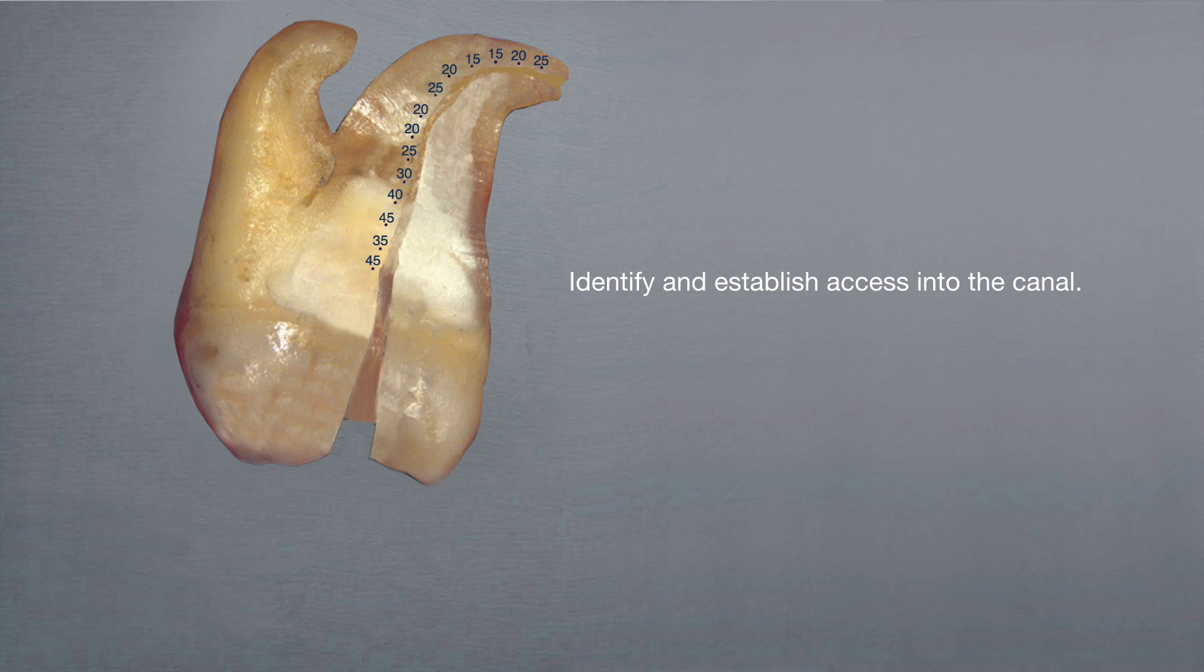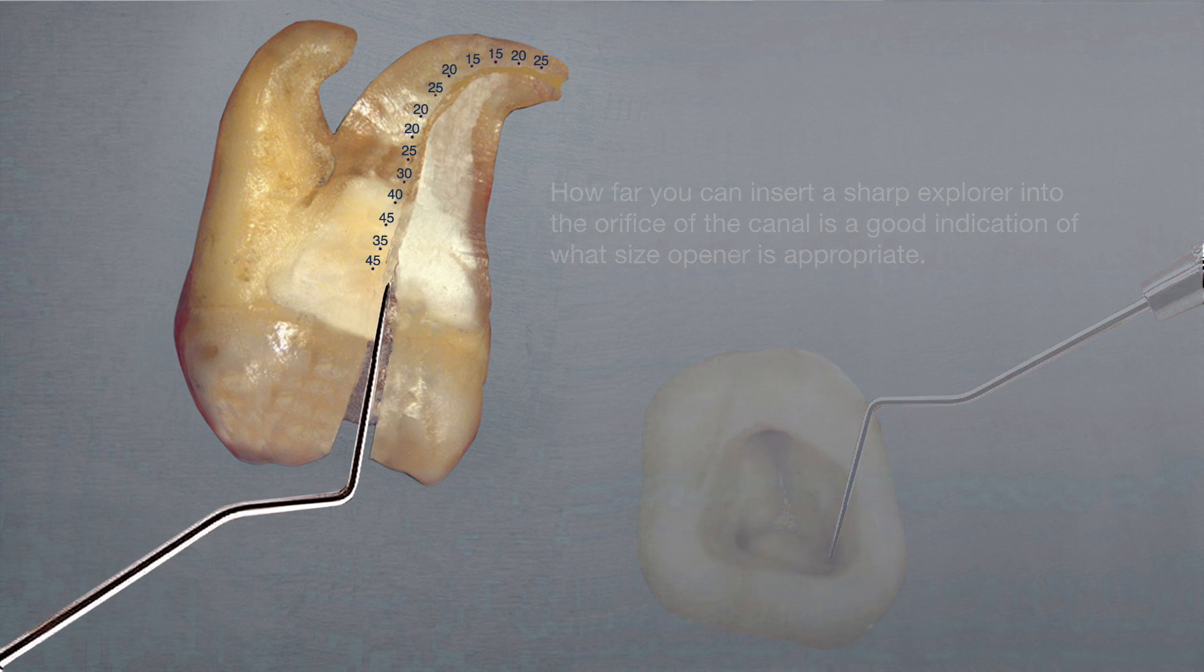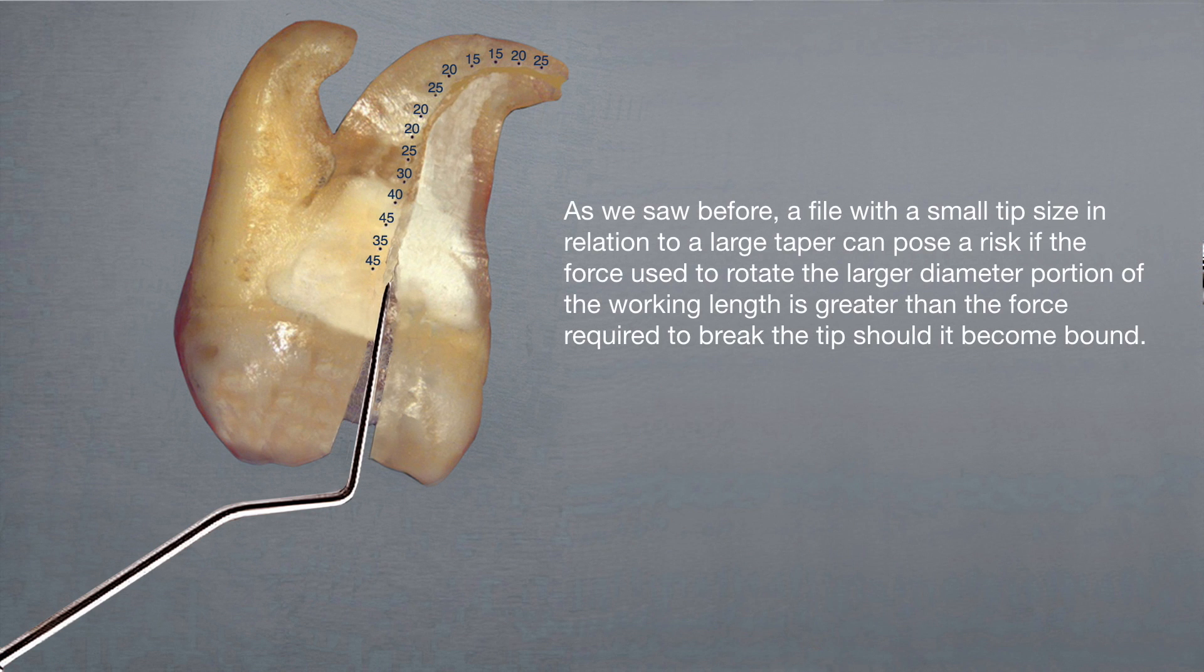Identify and establish access into the canal. How far you can insert a sharp explorer into the orifice of the canal is a good indication of what size opener is appropriate. As we saw before, a file with a small tip size in relation to a large taper can pose a risk if the force used to rotate the larger diameter portion of the working length is greater than the force required to break the tip should it become bound. Be sure to keep this in mind when selecting your initial file.